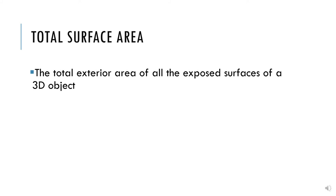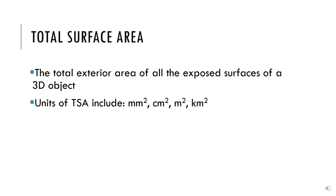Total surface area is the total exterior area of all the exposed surfaces of a 3D object. The units for area will be given in units squared — so that's millimeters squared, centimeters squared, meters squared, et cetera. The only difference between total surface area and area is that total surface area refers to 3D objects, whilst area refers to 2D objects as explained in the previous presentation.